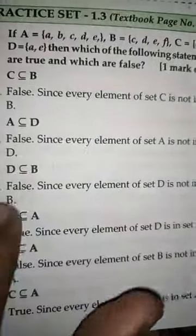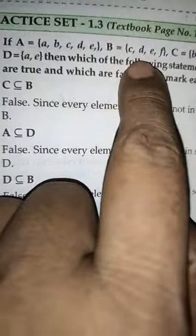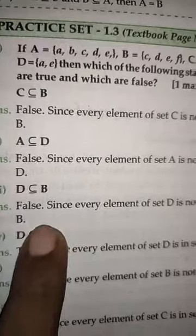Then D subset of B. D is a, e. B has e but not a, so this is also false.